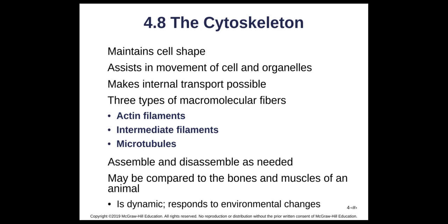The cytoskeleton maintains cell shape, assists in the movement of cells and organelles, and makes internal transport possible — stuff moving around the cell couldn't happen without it. It is made up of three main types of protein fiber: actin filaments, intermediate filaments, and microtubules. These are assembled and disassembled as needed. The cytoskeleton is dynamic — it can respond to environmental changes.